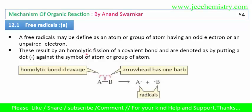I will explain everything about free radicals. A free radical may be defined as atoms or group of atoms having odd electrons — the unpaired electrons, or single electrons.